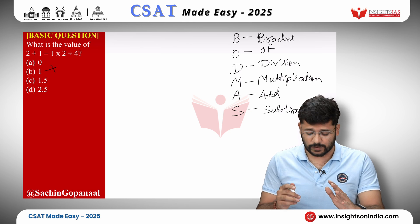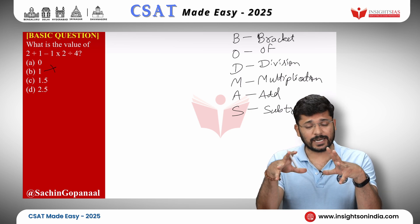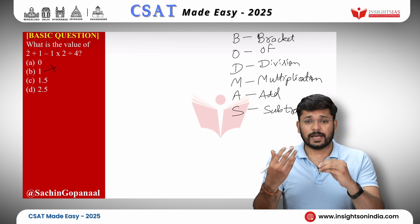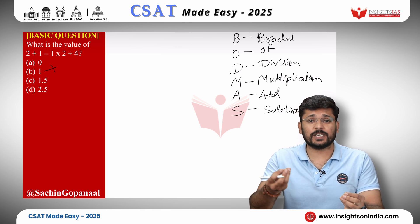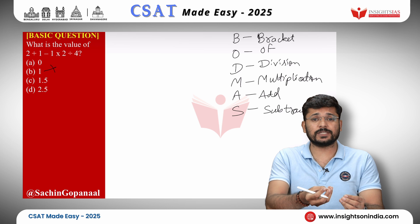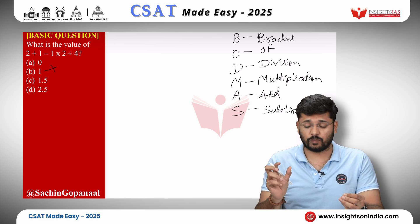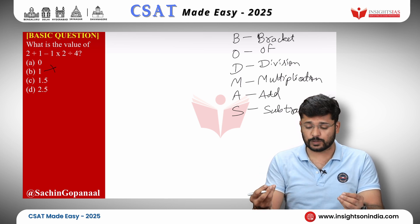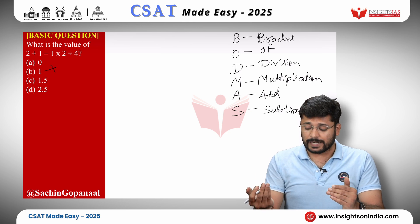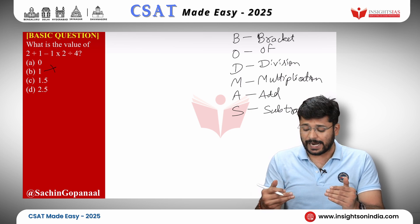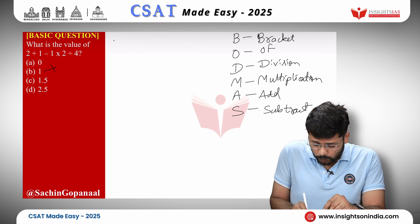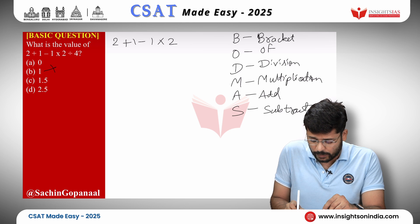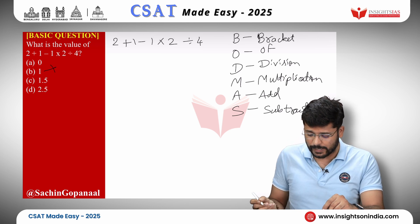This is the order in which mathematical operations should always be carried out. If there is any operation within brackets, it should be applied first. If there is 'Of' — used in expressions like 20 percent of 200 — we operate that first, then divide, then multiply, then add, and finally subtract. We shall apply BODMAS to this expression.